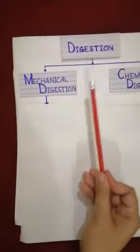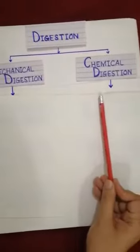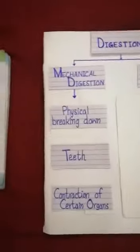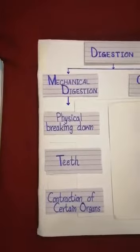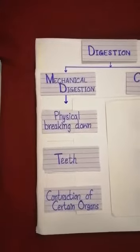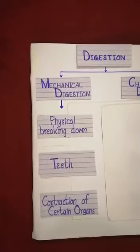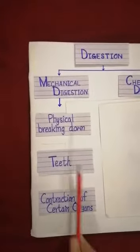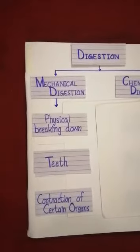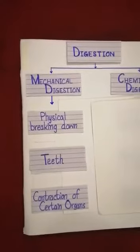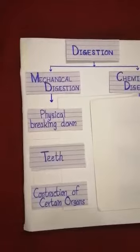Digestion is of two types: mechanical digestion and chemical digestion. First, let's discuss mechanical digestion. The word mechanical comes from machine, meaning mechanical digestion involves the physical breaking down of food into smaller pieces. It occurs by chewing, grinding, churning, and mixing of food.